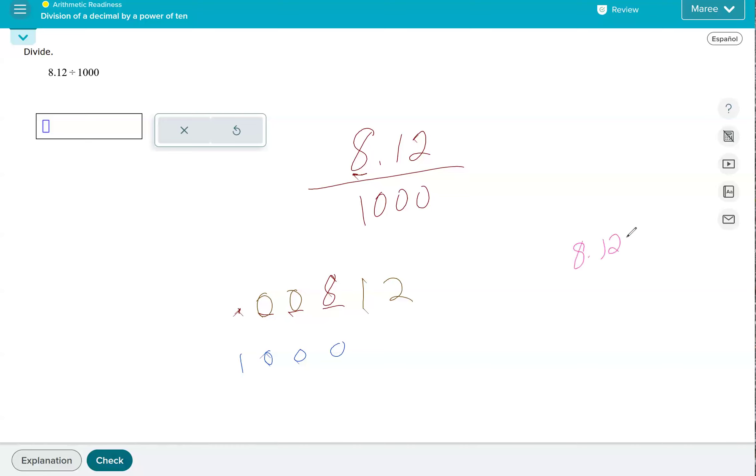So we have 8.12 divided by 1,000. If you count those three zeros, it looks like we're taking that decimal and we're going to the left. One, two, three. Put the decimal there and add the two zeros. So see how this decimal is no longer here. So 0.00812. That's exactly what we got here when we put our ones place right in the thousandth spot.